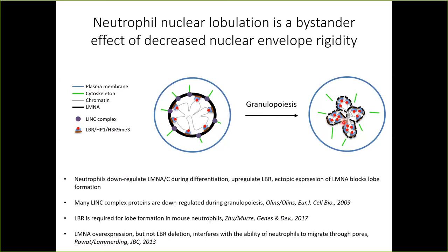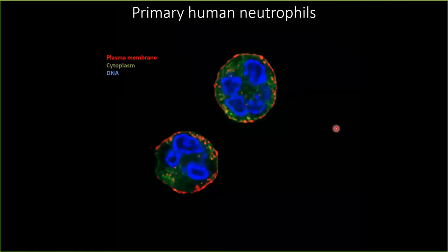Concurrent with this downregulation of nuclear lamina and increase in nuclear envelope flexibility, you have downregulation of the LINC complex. Via heterochromatin attachments through H3K9 trimethylation bound by HP1, bound by LBR — this canonical pathway that tethers heterochromatin to the nuclear envelope — this flexibility essentially allows the chromosomes to shrink-wrap themselves in nuclear envelope, leading to the lobe structure. If you overexpress lamin A you can prevent this, and similarly, if you delete the lamin B receptor, you can also prevent the lobes, although it does not affect compaction of heterochromatin.